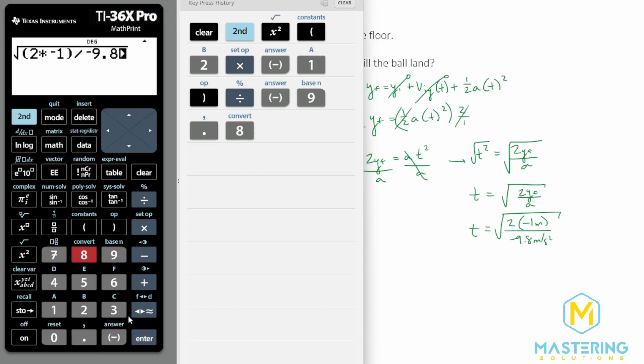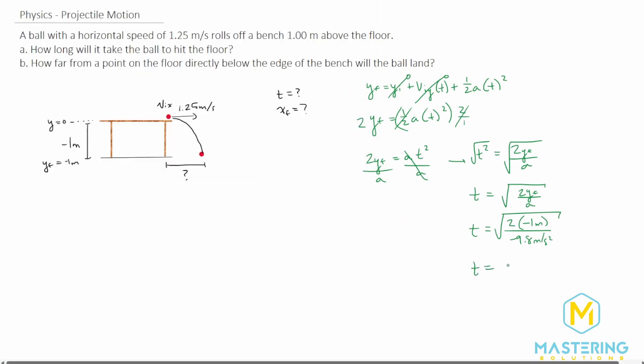So we have the square root of 2 times a negative 1 divided by negative 9.8 meters per second squared gives us 0.452 seconds, so the time that it's in the air is 0.452 seconds. So that's how long it will take to hit the floor.